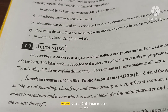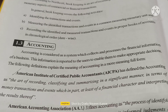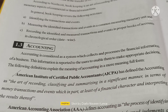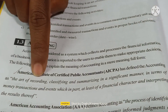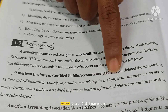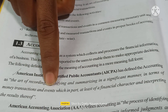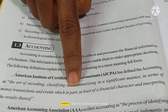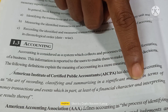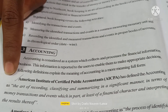The accounting definition given by the American Institute of Certified Public Accountants — AICPA — defines accounting as: the art of recording, classifying and summarizing in a systematic manner, in terms of money, transactions and events which are in part at least of a financial character, and interpreting the results thereof.